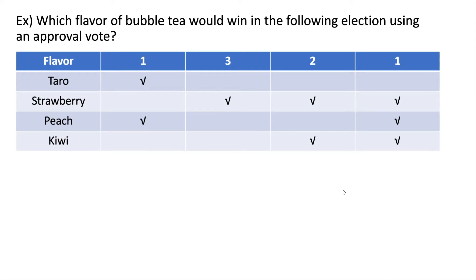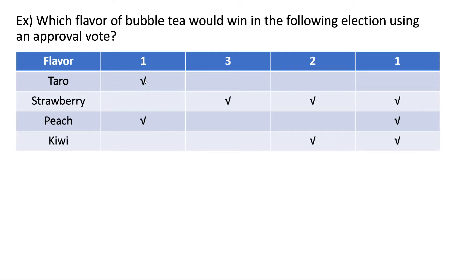Let's take a look at this example: which flavor of bubble tea would win in the following election using an approval vote? All of the check marks indicate whether or not a group of voters approves of a specific candidate. We treat these check marks as votes — like a one in a plurality vote. We see a check mark for tarot meaning this one voter approves of tarot, so they end up with one vote.